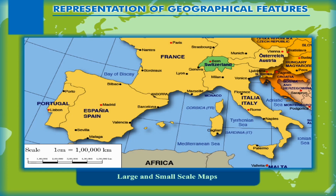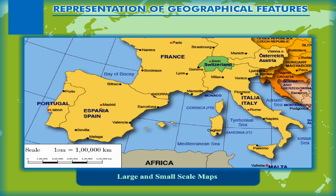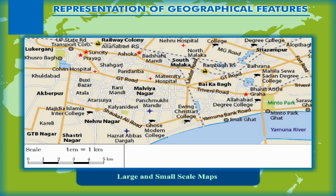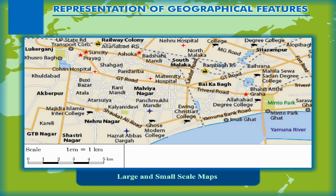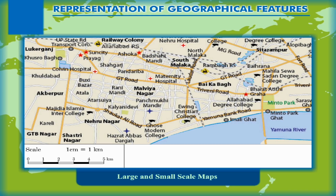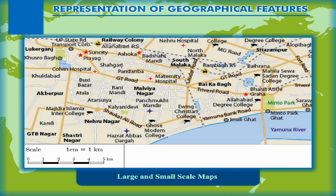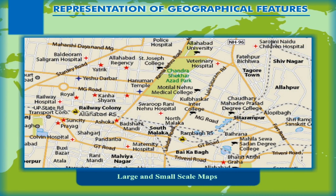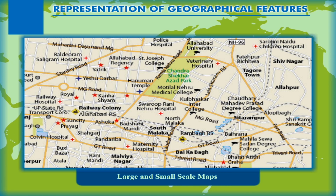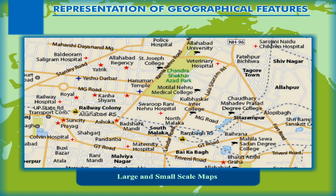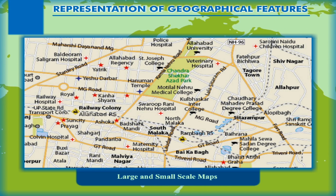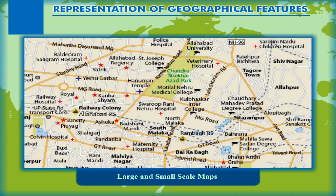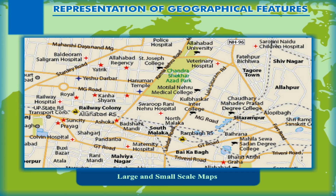Such a map is called a small-scale map. On the other hand, a city map with a scale of 1 cm equal to 1 km shows a locality and colony with detailed information like roads, schools, hospitals, etc. Such maps are called large-scale maps.